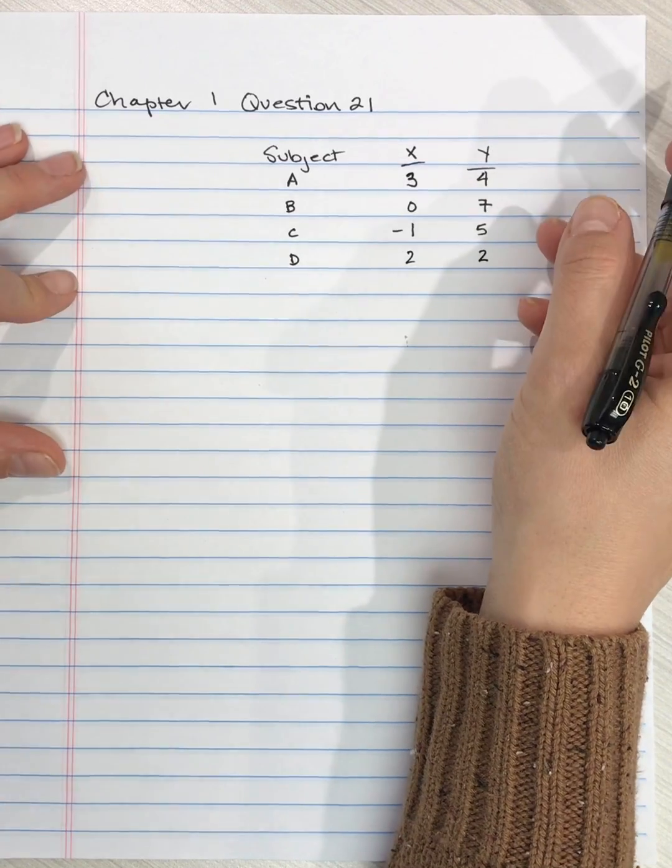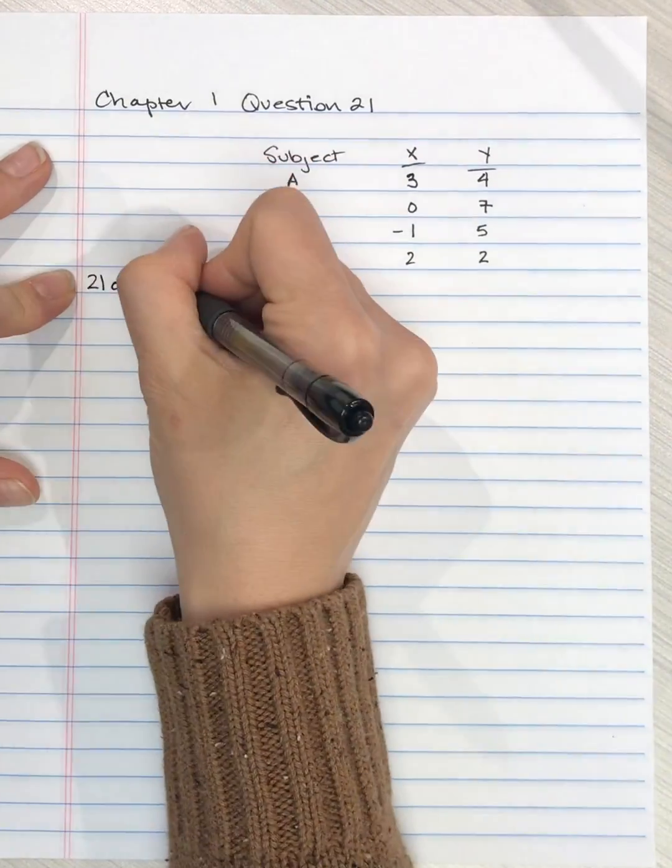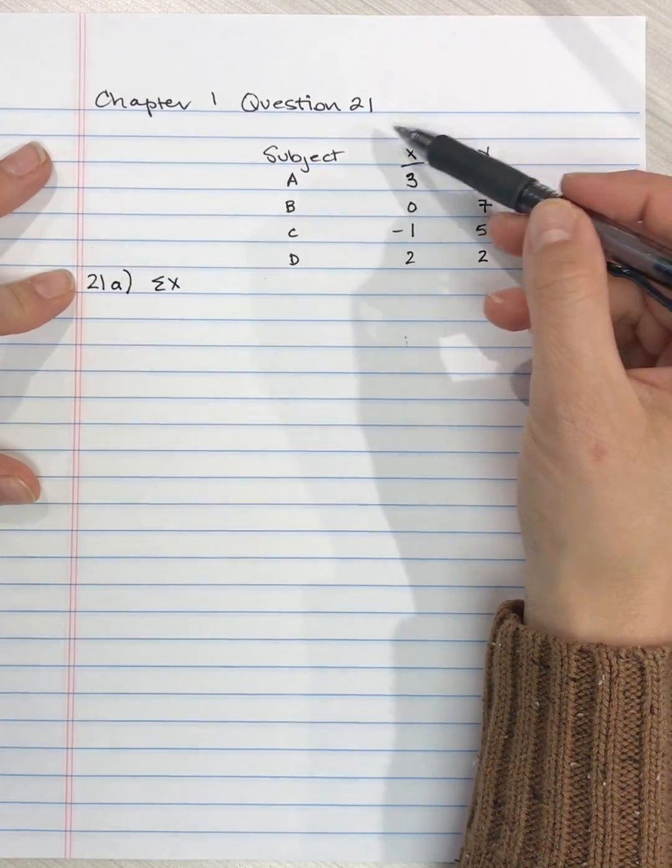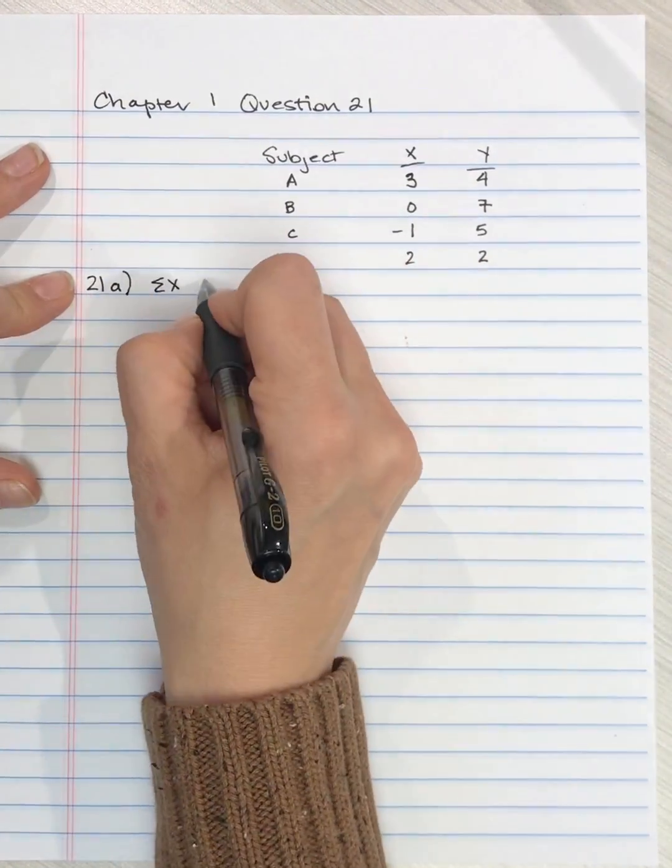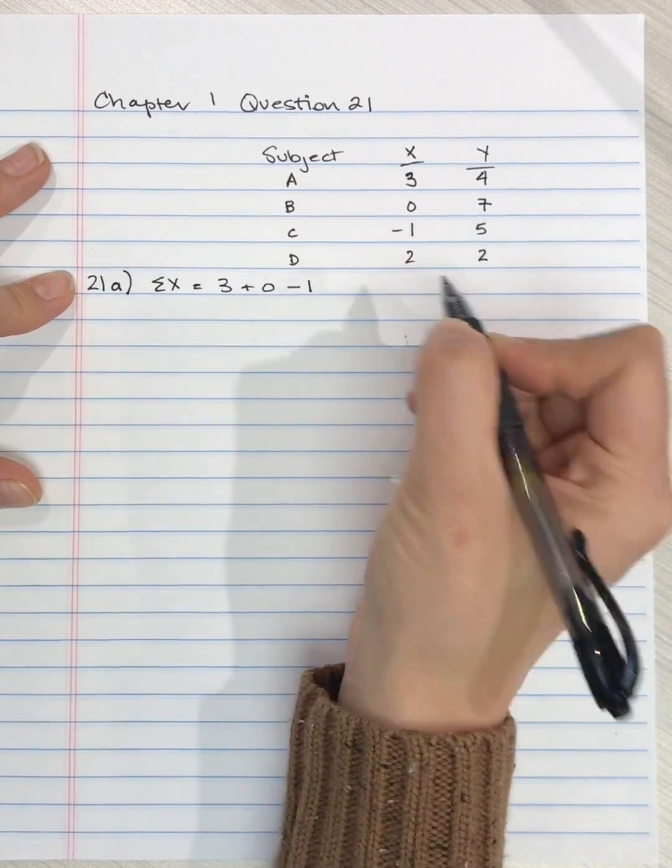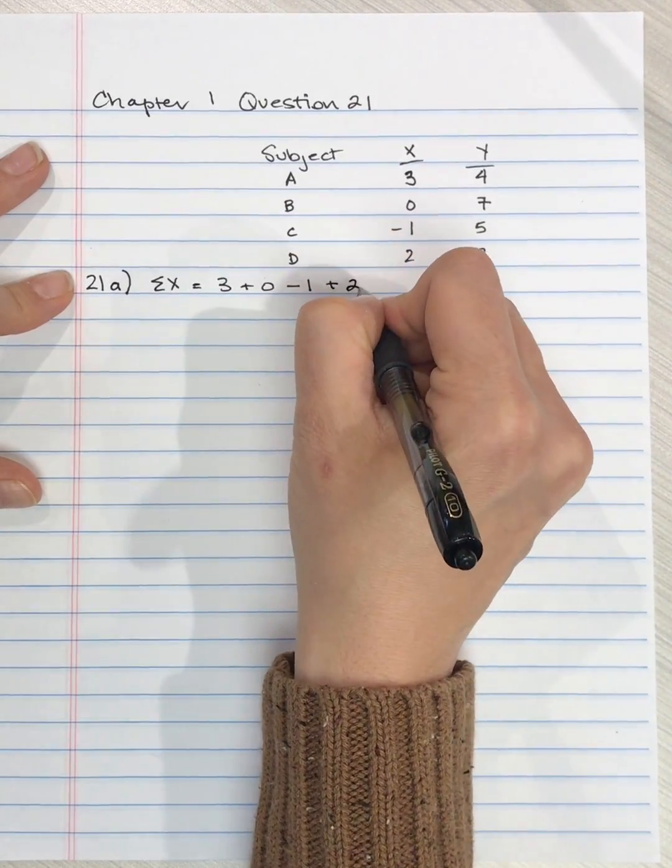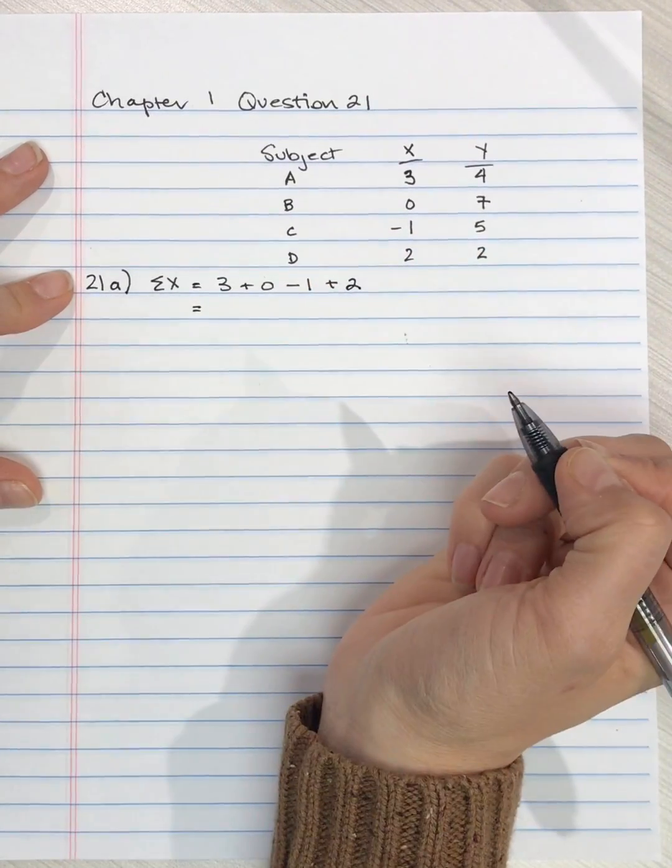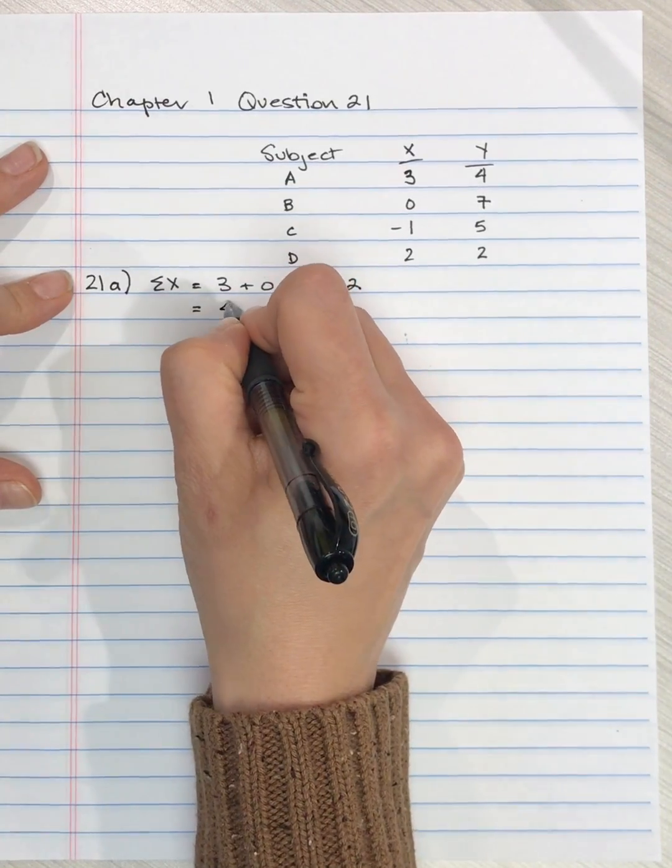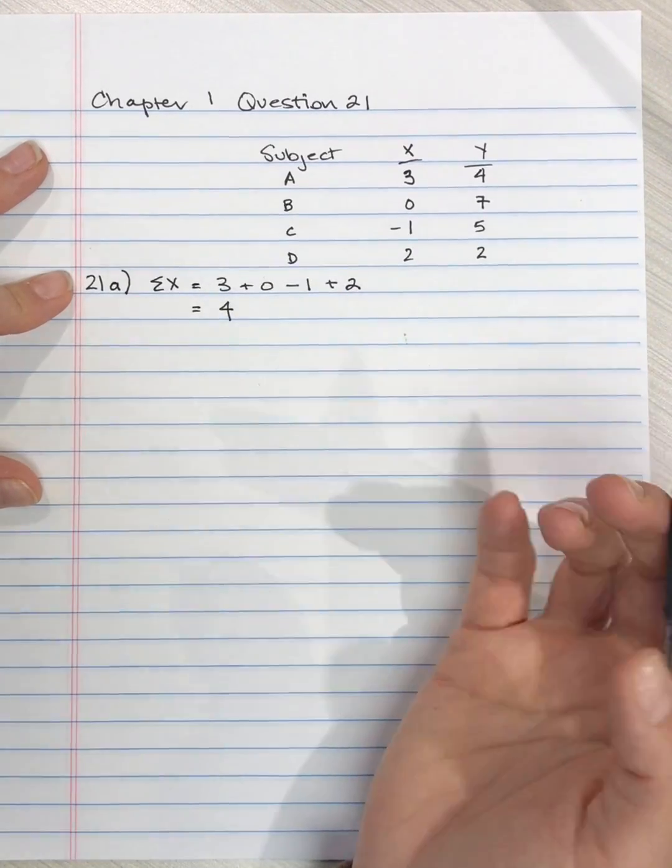And now question 21A asks us for the sum of X. That means we take just the X scores and we add them up. So we take three plus zero minus one or plus negative one plus two. And so that is four because three plus two is five minus one is four.